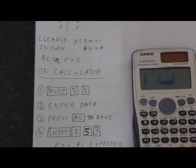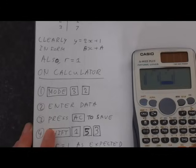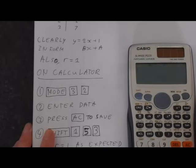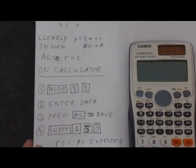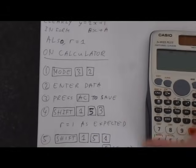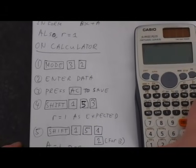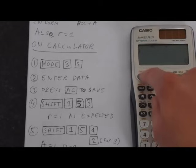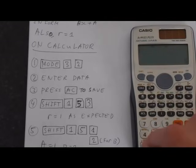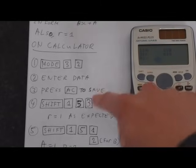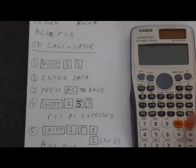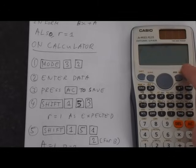We've got to save this data to memory. The AC button is like your save button. Press AC, and then we're going to have to do our calculations. We need back into the statistics menu. We're going to press Shift, then 1, then 5 puts us in regression, and we want 3, so we'll get R, and that gives us R equals 1, as we expected.